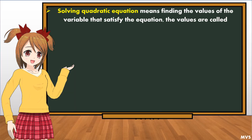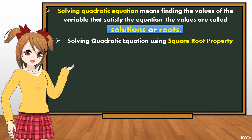Solving a quadratic equation means finding the values of the variable that satisfy the equation. The values are called solutions or roots. In solving a quadratic equation using the square root property, if x squared minus c equals zero, transpose negative c to the right side of the equation, and it will become positive c, so x squared equals c.